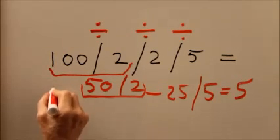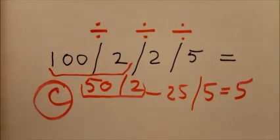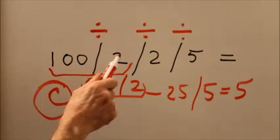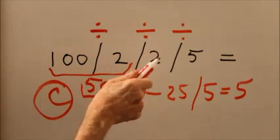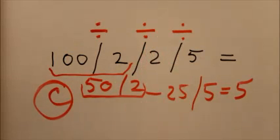to this question is C. 5 is what you get: 100 divided by 2 is 50, divided by 2 is 25, divided by 5 is 5. Always go from left to right.